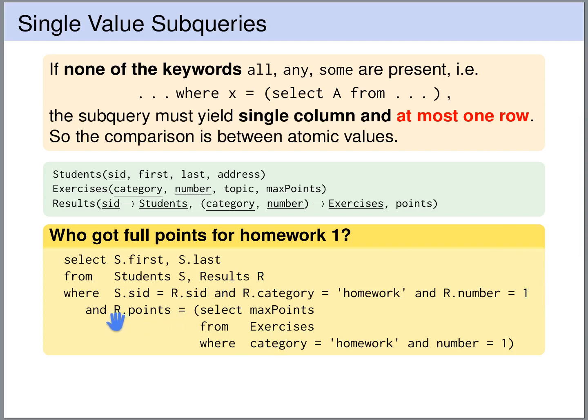Then here we have a comparison that the points obtained for the homework by the student S should be equal to, and in the subquery we select the max points from the exercises table for homework 1.